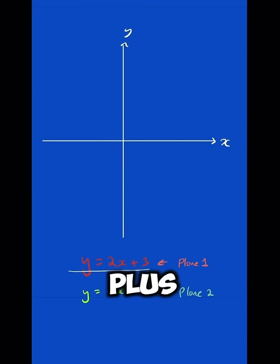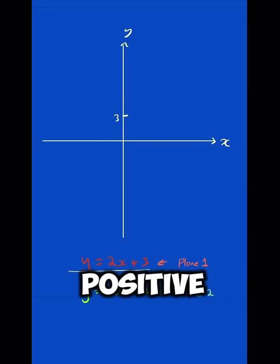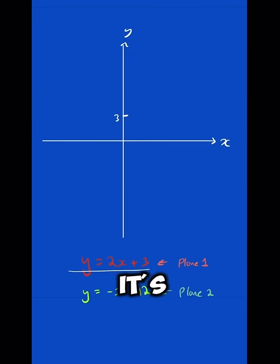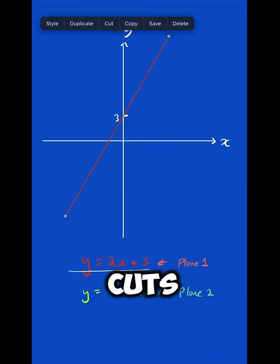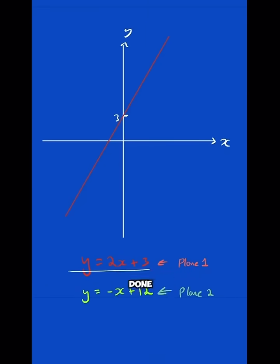So for plane 1, it says y equals 2x plus 3. What does that mean on a graph? So it would intersect at 3, positive 3, and it's going to go for every one that goes along in the x, it's going to go up by 2. So it will look like this. And same the other way, as long as it cuts through 3. That's plane 1.